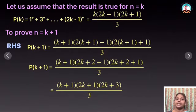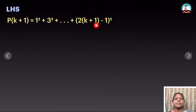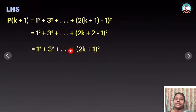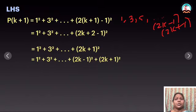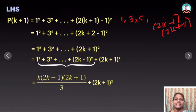Now I have to prove the LHS. LHS is 1² + 3² + ... with k+1 substituted. Therefore the last term becomes 2(k+1)-1, which is 2k+1, the whole square. The previous term is 2k-1 squared, since all terms are odd numbers and we reduce by 2. So LHS equals 1² + 3² + ... + (2k-1)² + (2k+1)². The sum 1² + 3² + ... + (2k-1)² we already assumed is equal to k(2k-1)(2k+1)/3, plus (2k+1)².